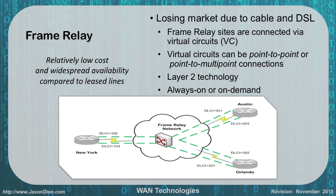The next one is frame relay. Because of the popularity of cable and DSL, frame relay has been decreasing in market share. Frame relay connects via virtual circuits — point-to-point or point-to-multipoint connections. For example, New York, Austin, and Orlando can all be connected together. It is a layer 2 technology that is always on or on-demand. Frame relay had relatively low cost and widespread availability compared to T1, E1, or T3 lines, but it's not as cheap as cable, DSL, or fiber optic.